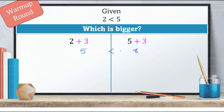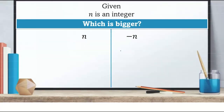These next ones get more challenging. Given that n is an integer — which is bigger, n or negative n? Integers include zero, one, two, three, and negative numbers like negative two, negative three, and so on. Pause the video and try some numbers to see which side is going to be bigger, n or negative n. Then come back and see if we get the same answer.